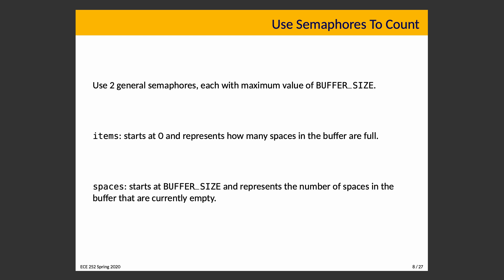For that reason, we will create two semaphores. If your semaphore system allows a maximum value, you'd want that to be buffer_size. The semaphore 'items' starts at zero and represents the number of spaces in the buffer that are full. The semaphore 'spaces' starts at buffer_size and represents the number of spaces that are currently empty. At the beginning of time when we create everything, the buffer should be empty — items is zero and spaces is however many spaces there are in the buffer.